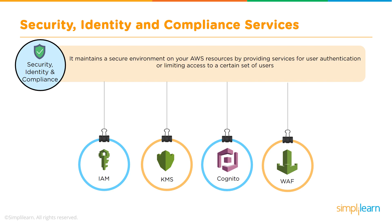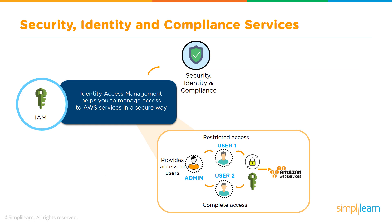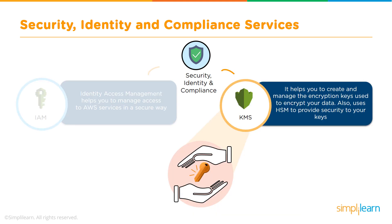We can also create rules designed for our specific application. IAM helps us control access to AWS services and resources — I can restrict user access or give a user complete access. If it's an admin, I can assign complete access; if it's a regular user, I can provide privileged, limited, or no access depending on their role. KMS helps create and control encryption keys, and we can also use a Hardware Security Module, or HSM, to protect the security of both our data and the encryption keys themselves in the cloud.